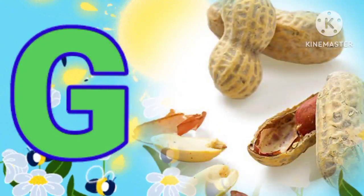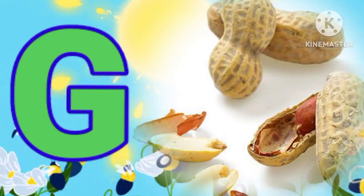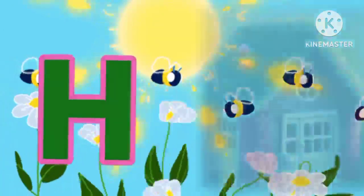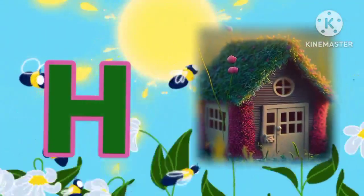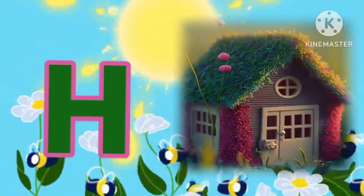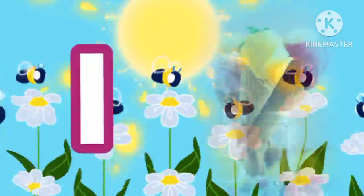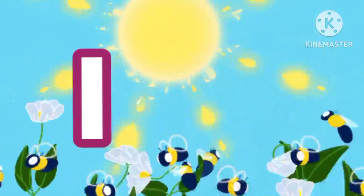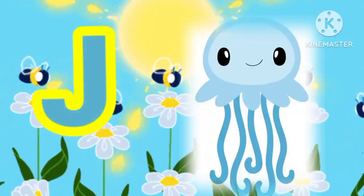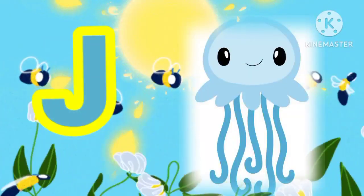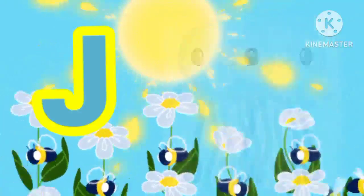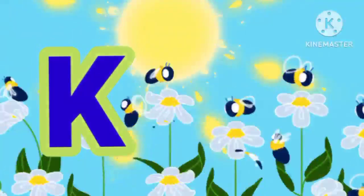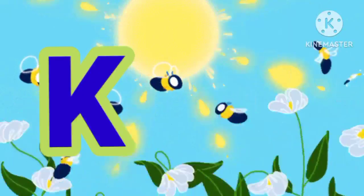G for groundnut, H for hut, I for ice cream, J for jellyfish, K for kangaroo, L for lake.